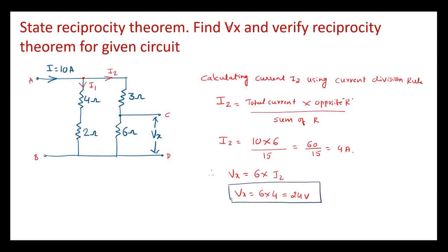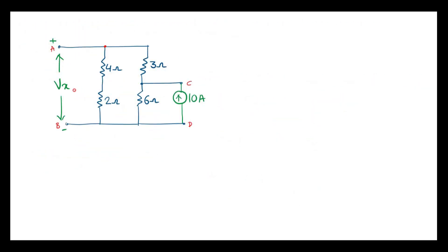Thus we found the value of Vx which is 24 volts. Now according to the reciprocity theorem, let's interchange the current source and voltage source. I will connect a current source at terminal C and D and find voltage Vx across A and B. Let me draw the equivalent circuit — between terminal C and D I have connected a 10 A current source, and between A and B I will find Vx. I should get Vx the same as the previous value.